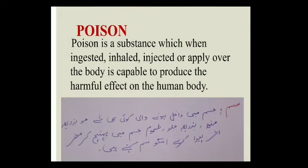Now let's discuss poison. Poison is a substance which, when ingested, inhaled, injected, or applied over the body, is capable of producing a harmful effect on the body. So poison can be any substance that is eaten through the mouth, inhaled, injected into the body, or simply applied on the body — if it is capable of producing a harmful effect, it is called poison.